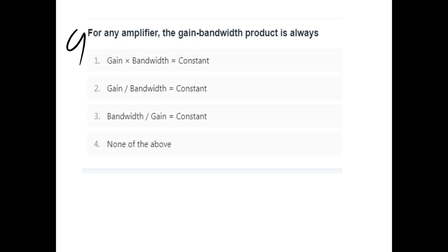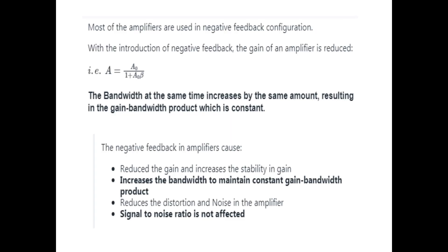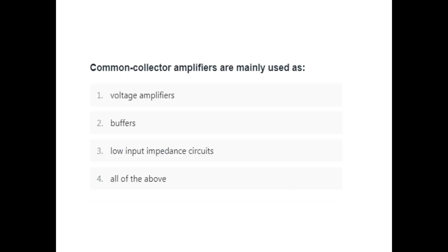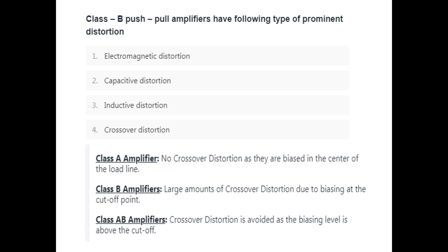For any amplifier, the gain bandwidth product is gain into bandwidth equals constant. Negative feedback in an amplifier causes — option D — crossover distortion.